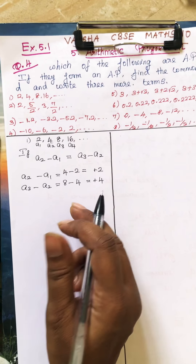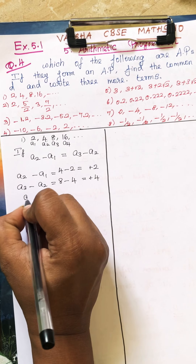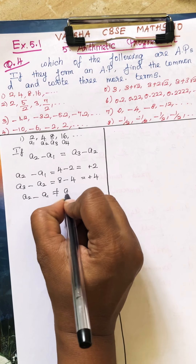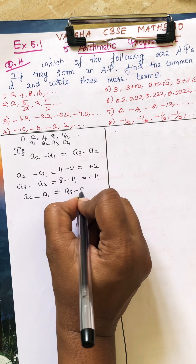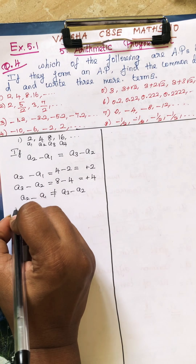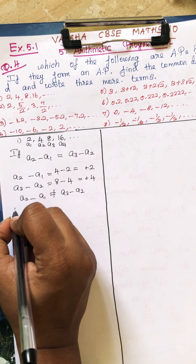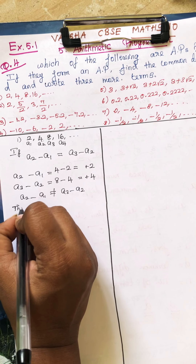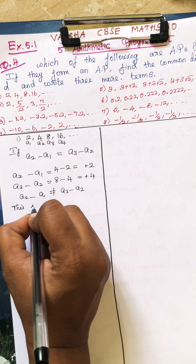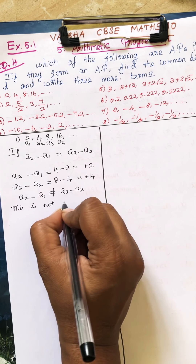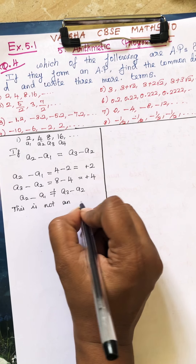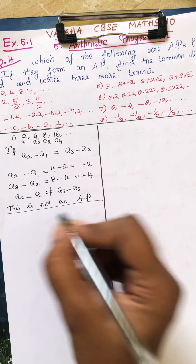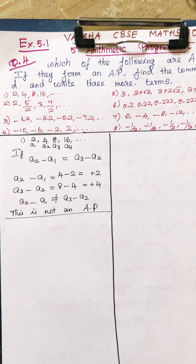See students — is this equal? No, this is not equal. A2 minus A1 is not equal to A3 minus A2. So this series is not an AP.